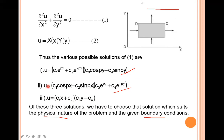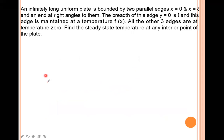Now look at one problem. An infinitely long uniform plate is bounded by two parallel edges x = 0 and x = l, and an edge at right angles to them. The breadth of the edge y = 0 is l, and this edge is maintained at temperature f(x). All the other three edges are at temperature 0. Find the steady state temperature at any interior point of the plate.